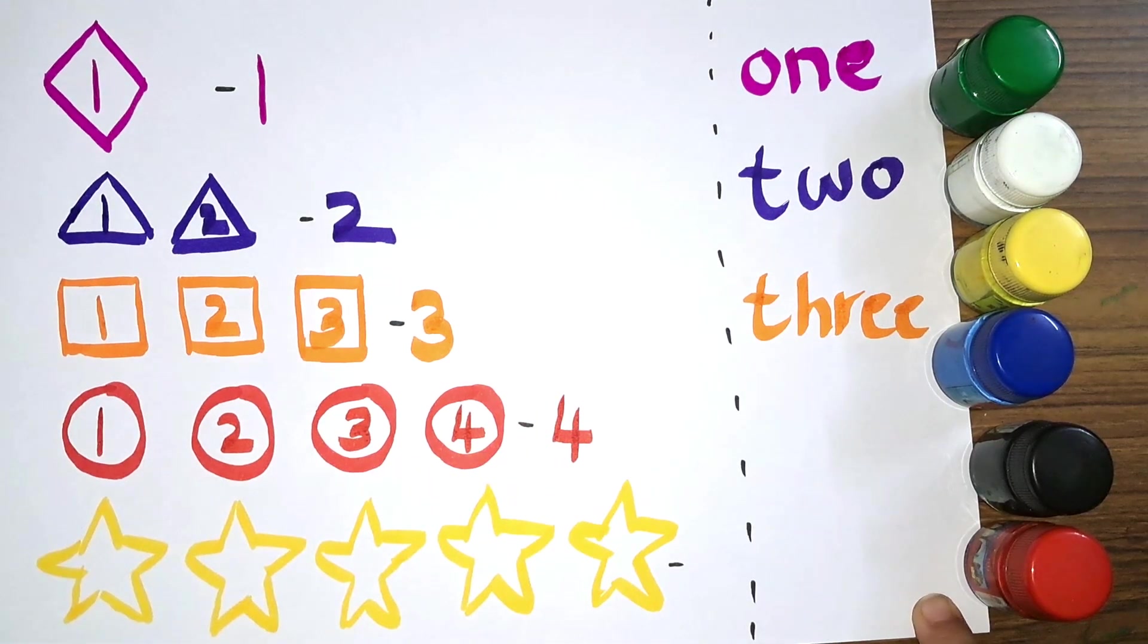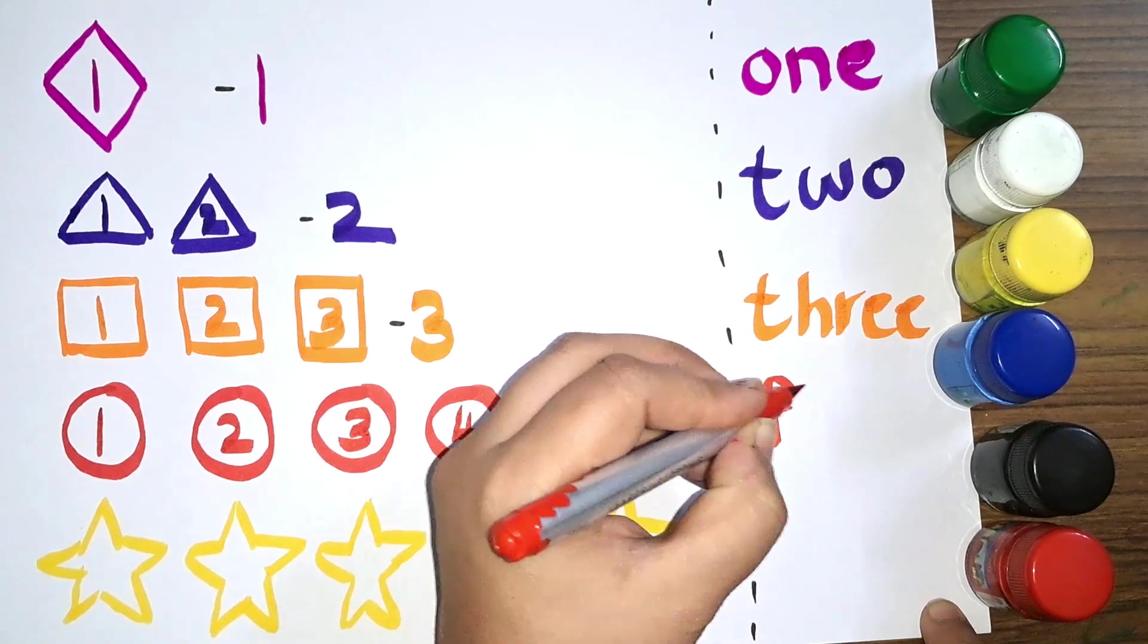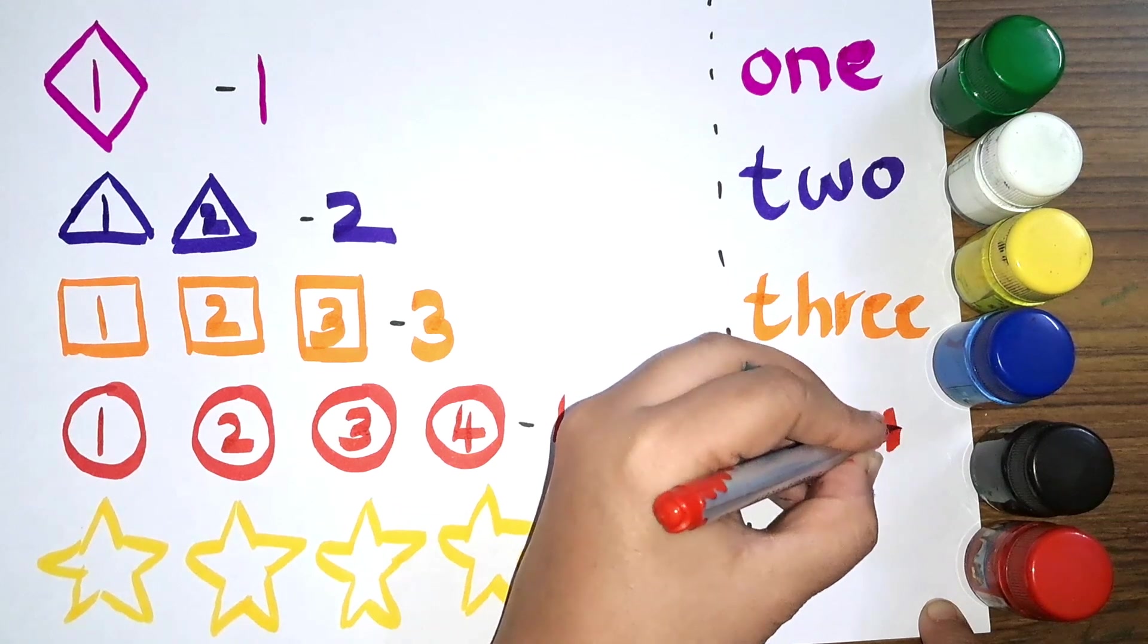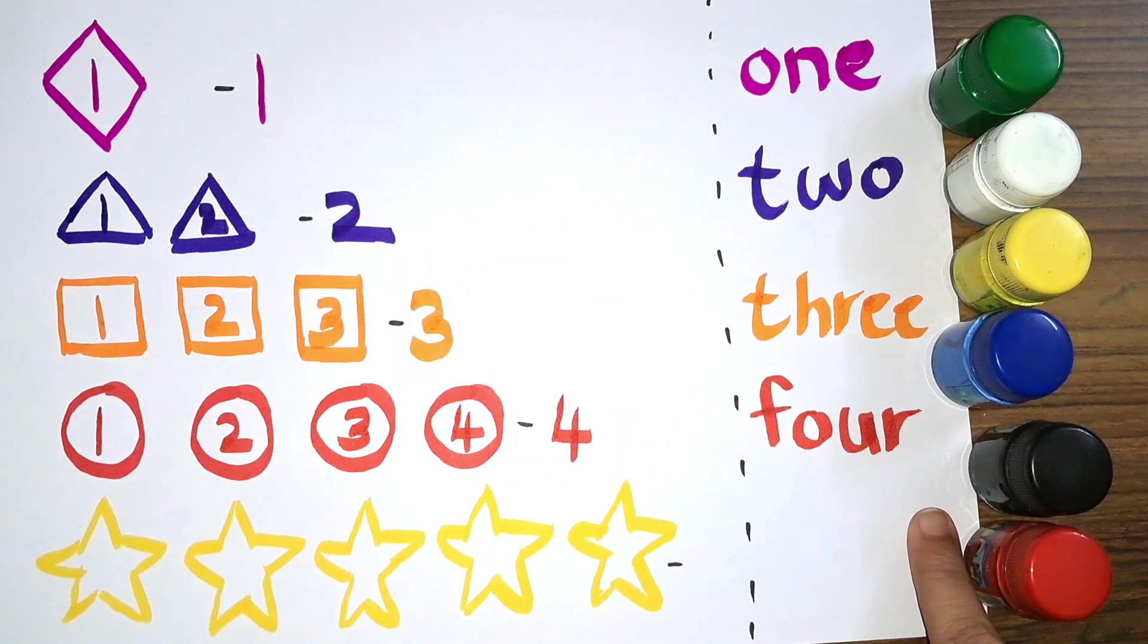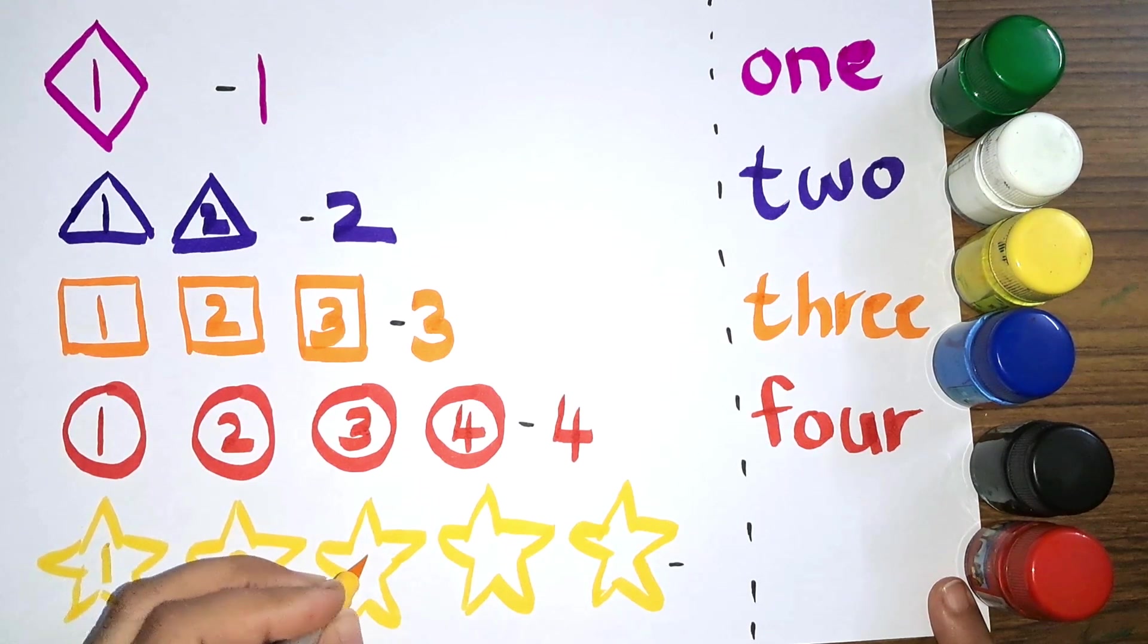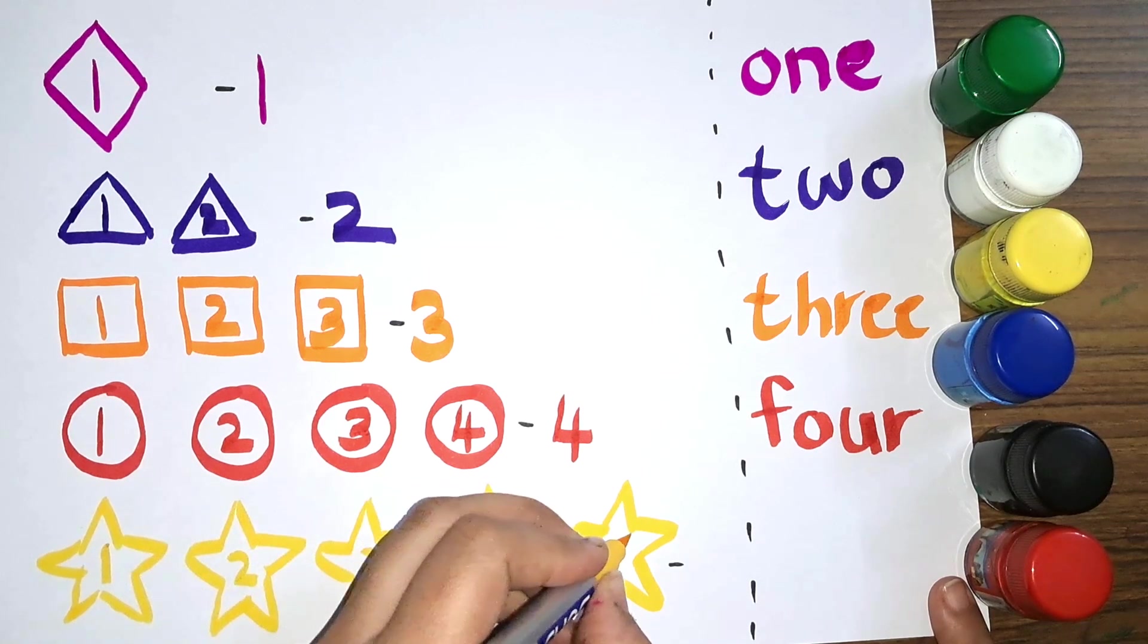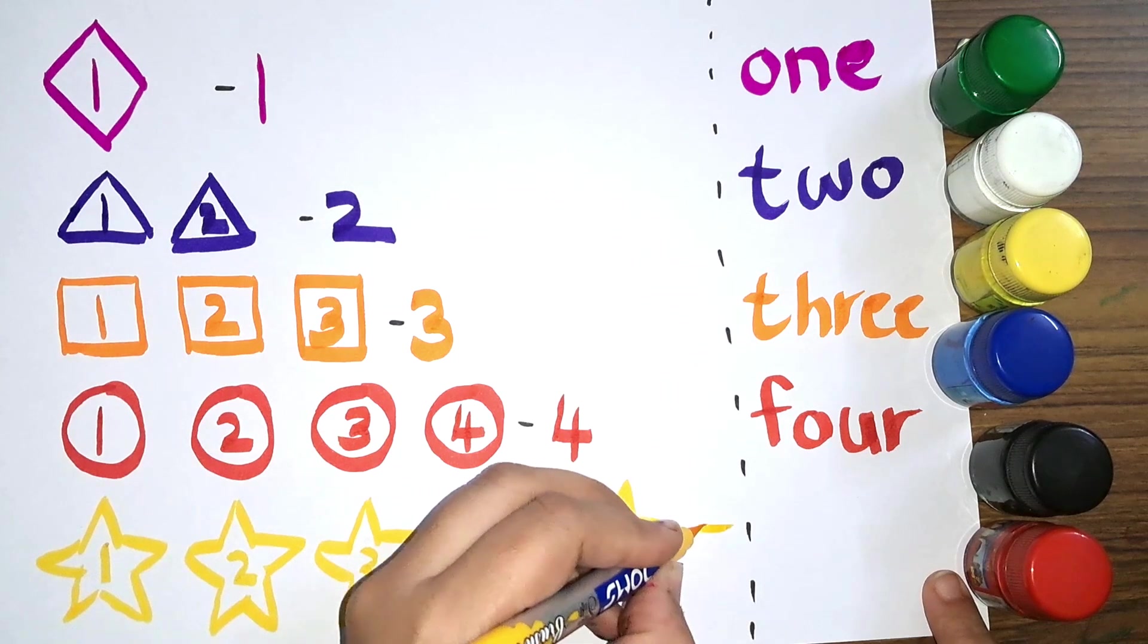Let's write the spelling number name of four: F-O-U-R, four, number four. Next we have stars. Let's count how many stars do we have. One, two, three, four, five. We have five stars, number five.